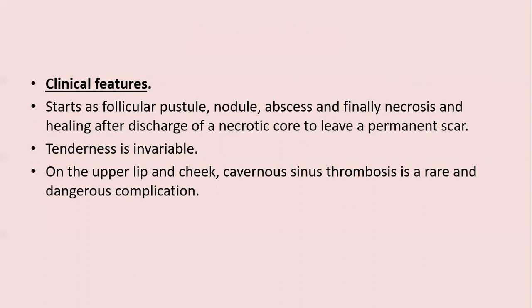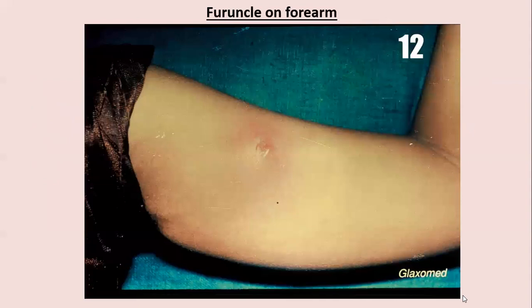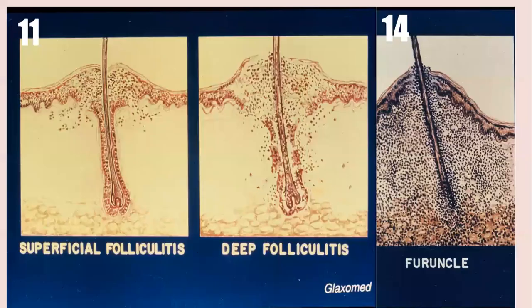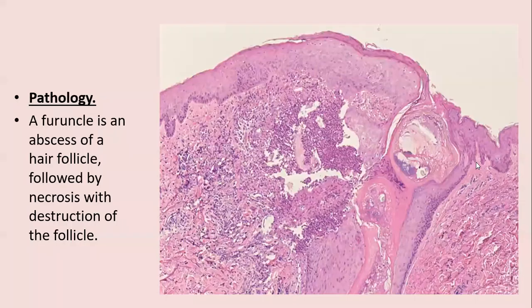In the upper lip and cheek area, cavernous sinus thrombosis is a rare but dangerous complication. A furuncle appears as a large boggy swelling, tender to palpate with surrounding erythema. Histologically, when neutrophilic infiltrate is limited to the ostium it is superficial folliculitis; when neutrophils are seen throughout the hair follicle it is deep folliculitis. In furuncle formation there is a large abscess within the dermis with destruction of the hair follicle.